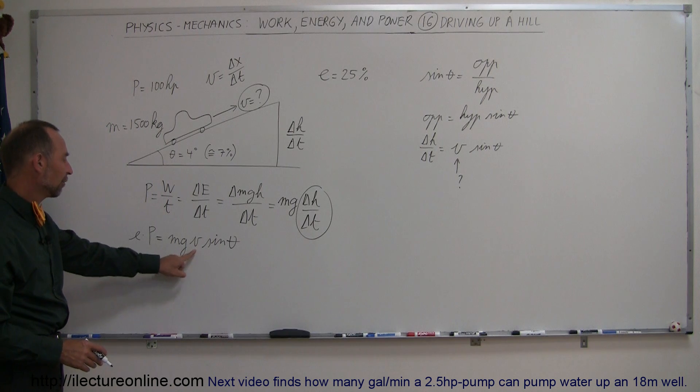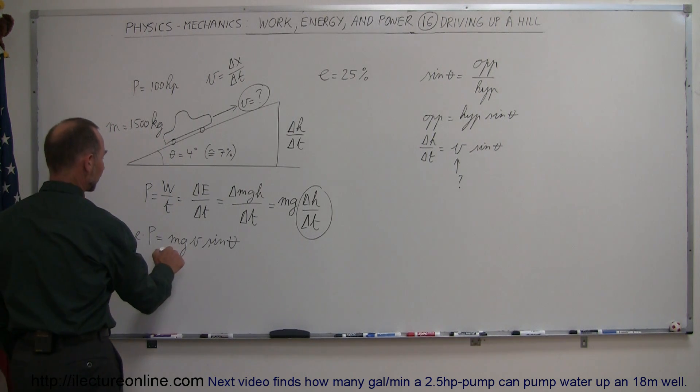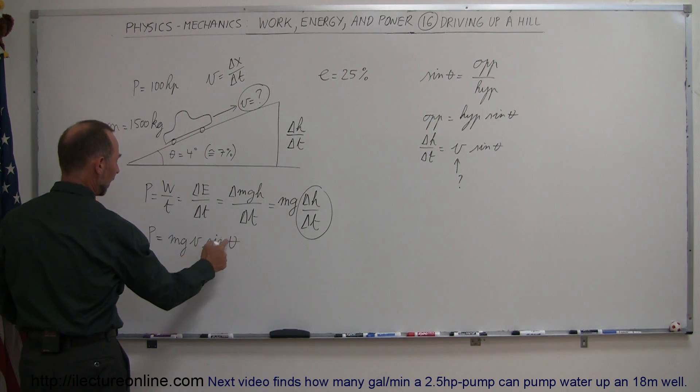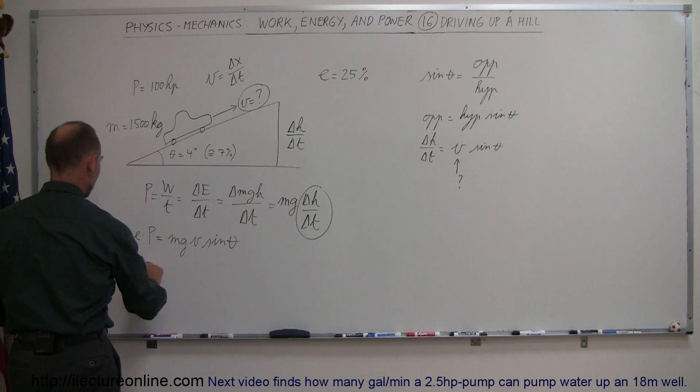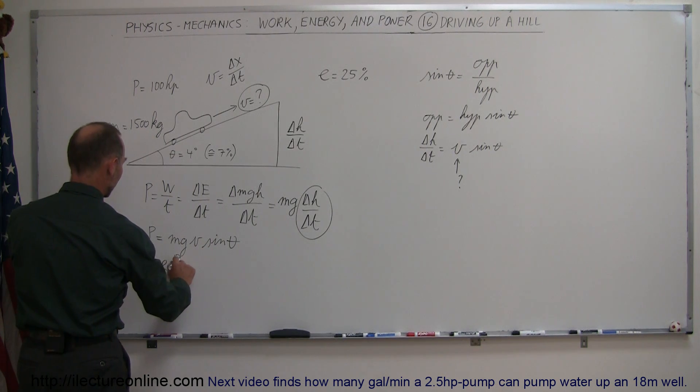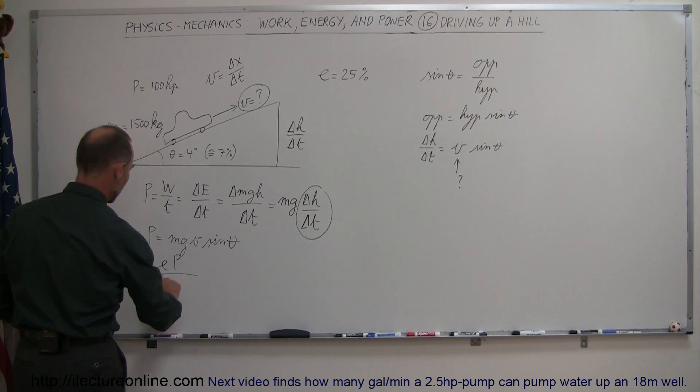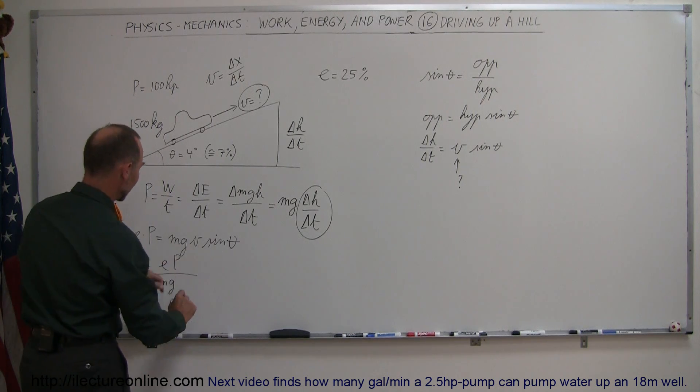So now we have to solve this for V, so I'm going to divide both sides by MGH and sine theta, and turn the equation around. So we have V is equal to the left side, E times P, divided by MGH, and divided by the sine of theta.